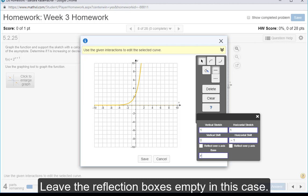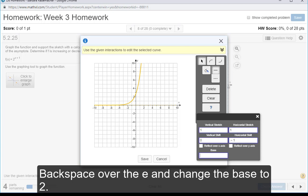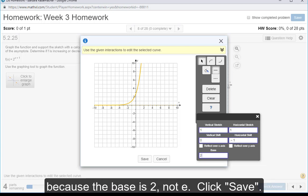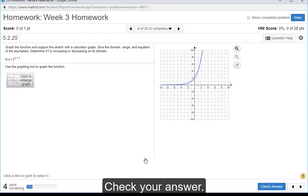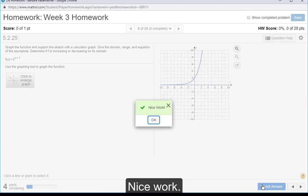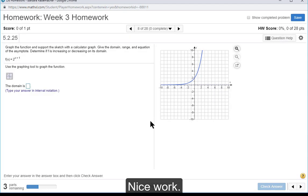Leave the reflection boxes empty in this case. Backspace over the e and change the base to 2, because the base is 2, not e. Now click save and check your answer. Nice work.